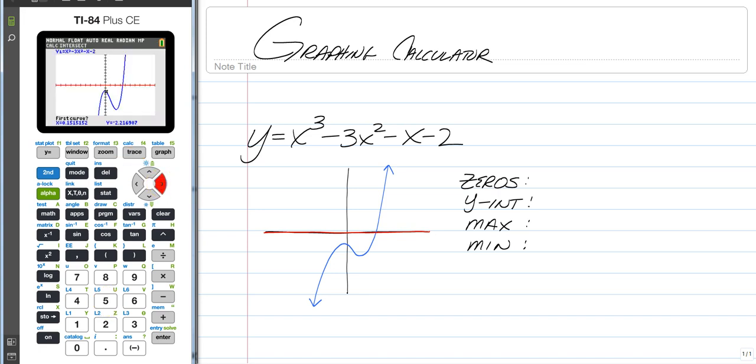Now your calculator is going to ask you for the first curve which means what do you have in y1 and what you need to do is you just need to get close to your intersection. Now since there is only one intersection it is not that important to get close but if you had multiple then you would want to get pretty close.